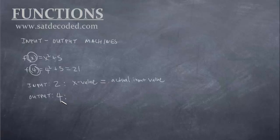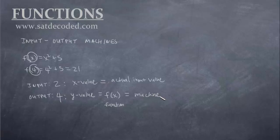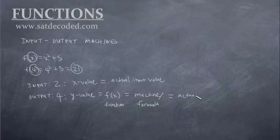Outputs — there are four of them. If inputs are x's, then outputs are y's, the y value. We can think of y equaling the function itself, f of x. Functions are always attached to some sort of formula, and that formula I call the machine, because this is the machine that will spit out your output. You stick something into this machine or formula, and out comes an output. And when you calculate this formula, you come out with some sort of value — in this case, 21. I call that the actual output value. Those are the four outputs.